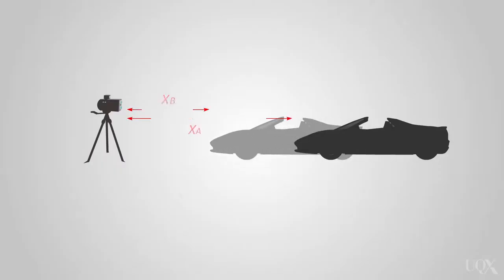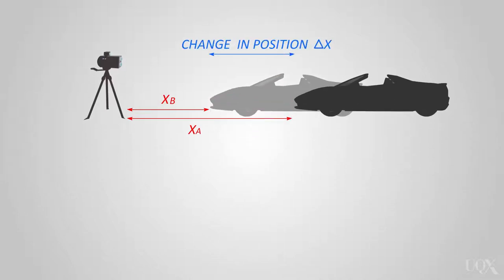The distance from the unit to the vehicle can be calculated by change in position, delta x, equals the speed multiplied by the time interval, divided by 2, where v is the speed of light, and delta t is the time for the return trip. The factor of 2 is needed since the pulse makes this return trip.